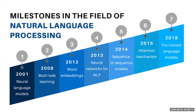Then the deep learning era started in the 2000s with the usage of neural networks in language modeling. In 2001, the first language model with a neural network was proposed. It consisted of only one hidden layer.